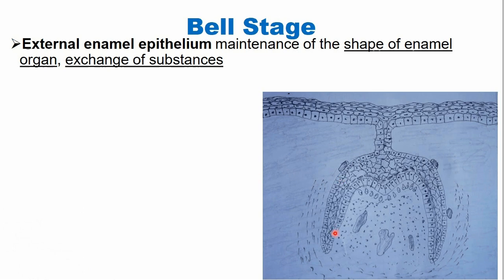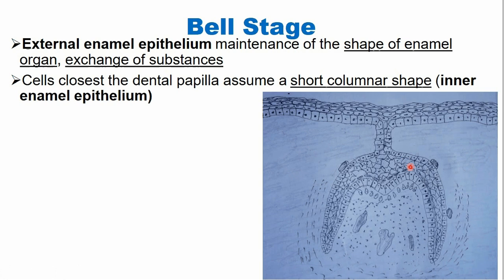There are some cells close to the dental papilla, and we call these the inner enamel epithelium cells. These inner enamel epithelium cells become tall columnar, and later they will form the ameloblasts in the bell stage. So these cells are currently short columnar but will become tall columnar.